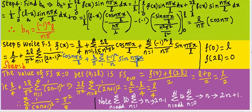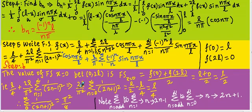Students are requested to note: when changing sigma n = 1 to infinity to sigma n = 0 to infinity, n is to be replaced by (2n+1). In this problem, since the limit is defined from 0 to infinity, n is replaced by (2n+1) when converting from sigma n = 1 to sigma n = 0 to infinity.